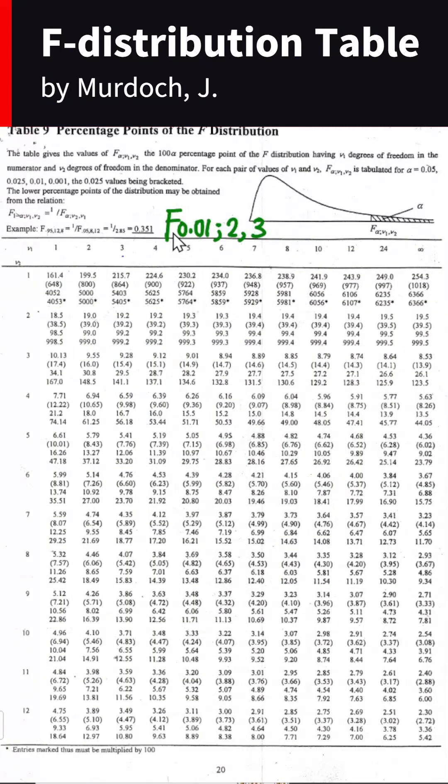If let's say we are looking for the F value with 0.01 level of significance, and the first degree of freedom is 2, while the second degree of freedom is 3.